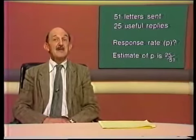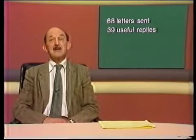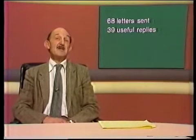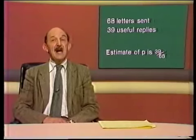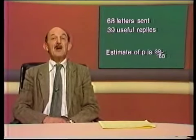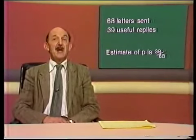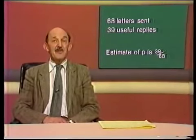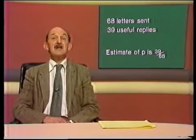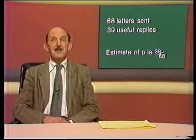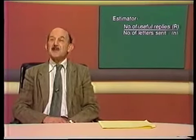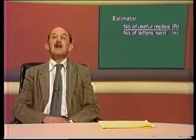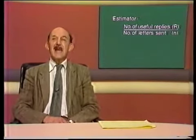But suppose someone else in the next city carried out a similar study, sending 68 letters and getting 39 useful replies. This would give a different estimate for p of 39 over 68, or 0.57. We'd have two different estimates of our unknown parameter p. But we get these by the same recipe or estimating formula, which is, observe the number of useful replies r and divide by the number of letters sent n.